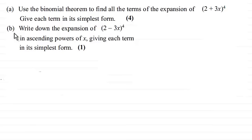And then the second part, part b, we've got to write down the expansion of 2 minus 3x all to the power 4 in ascending powers of x, giving each term in its simplest form for one mark.